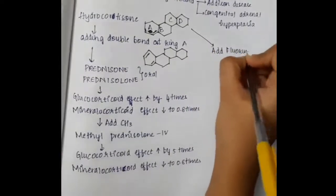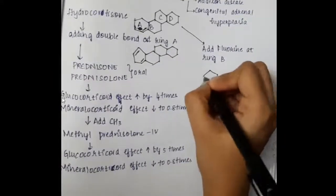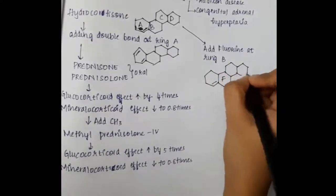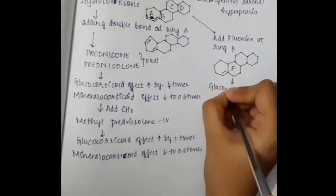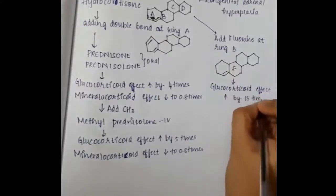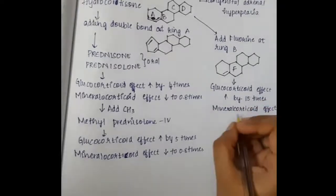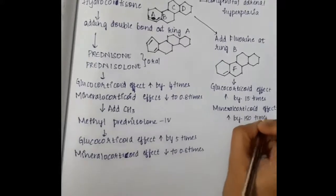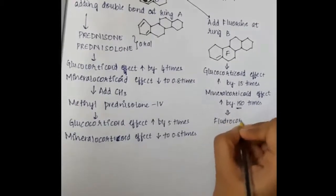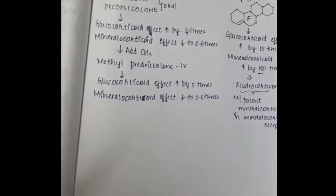If we add fluorine at ring B, this forms fludrocortisone. In fludrocortisone, the glucocorticoid effect is increased by 15 times, whereas the mineralocorticoid effect is increased by 150 times. Fludrocortisone is the most potent mineralocorticoid receptor agonist.